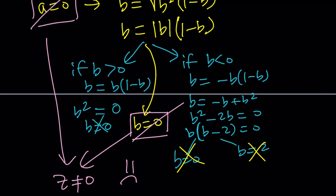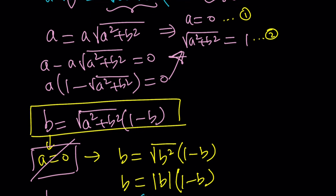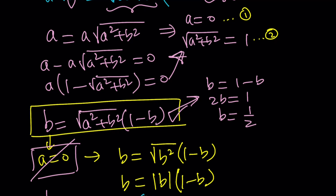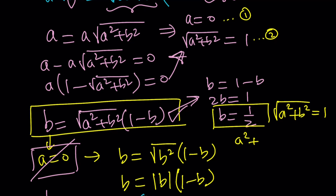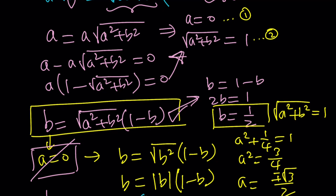Case 2: the square root of A squared plus B squared equals 1. Substituting into the imaginary equation gives B equals 1 minus B, so 2B equals 1, meaning B equals one half. Now we find A using the condition that the square root of A squared plus B squared equals 1. With B equal to one half, A squared plus one fourth equals 1, so A squared equals three fourths, giving A equals plus or minus root 3 over 2. If you're familiar with trigonometry, these values should look familiar.